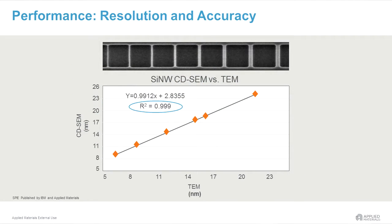This chart shows a demonstration of resolution and accuracy in an e-beam CD-SEM which stands for Critical Dimension Scanning Electron Microscope. The diameter of silicon nanowires was measured down to 6 nm in widths and compared as reference to a transmission electron microscope.